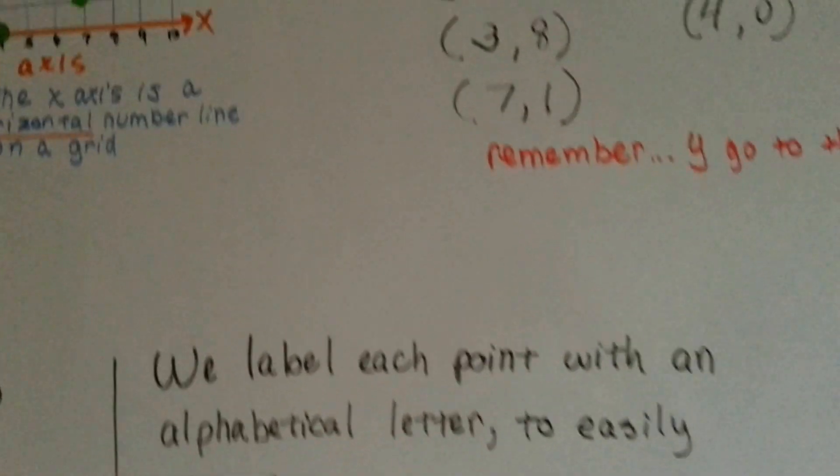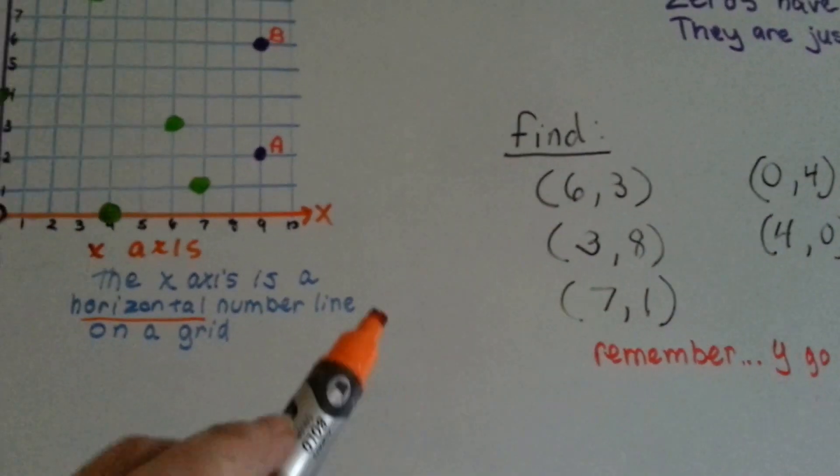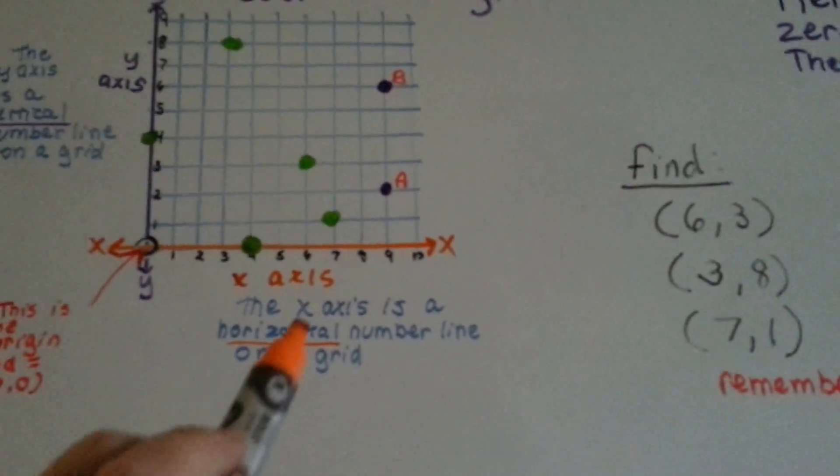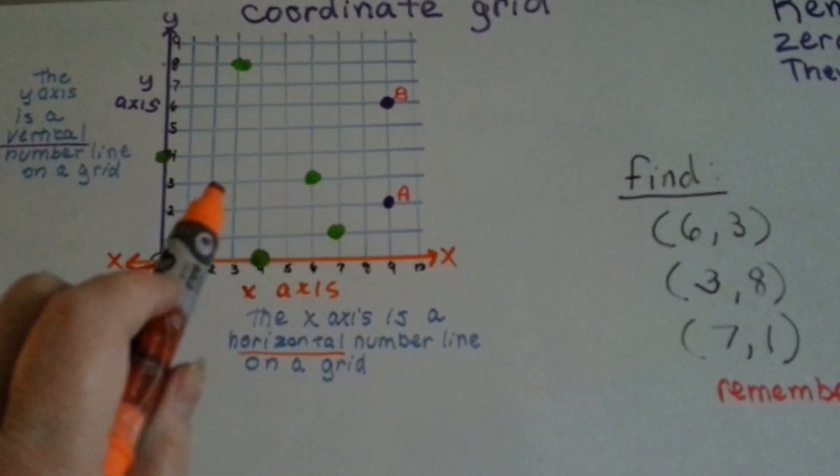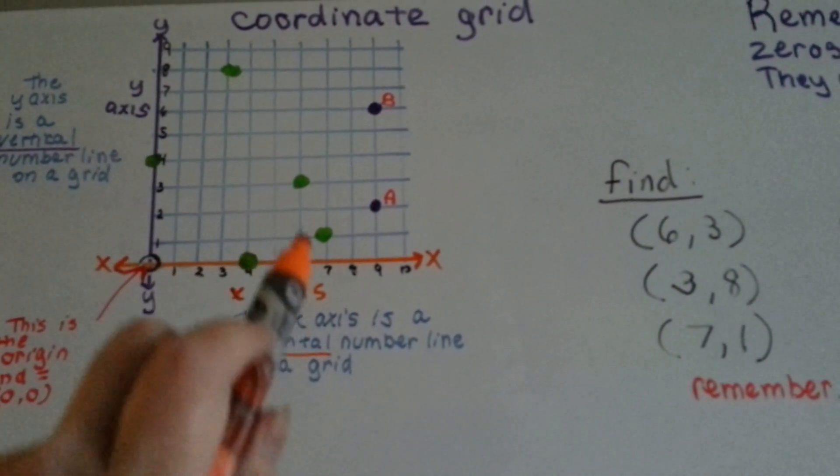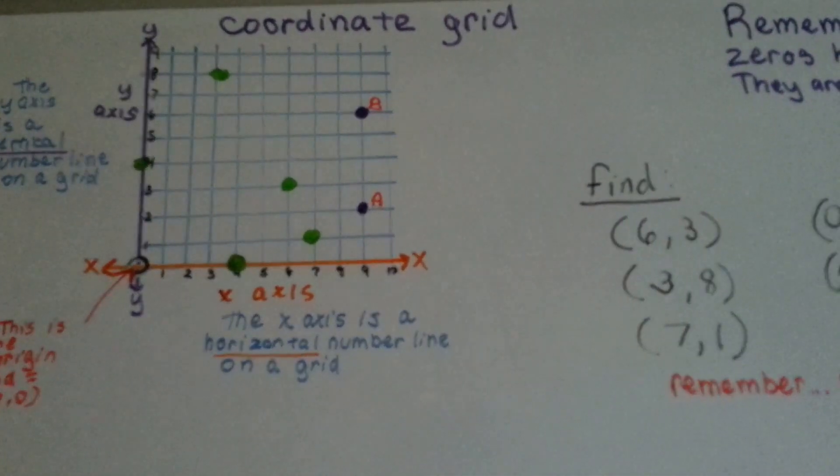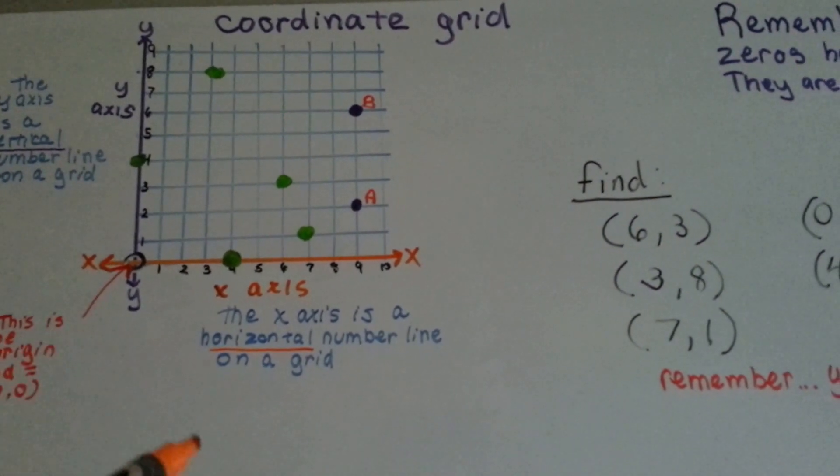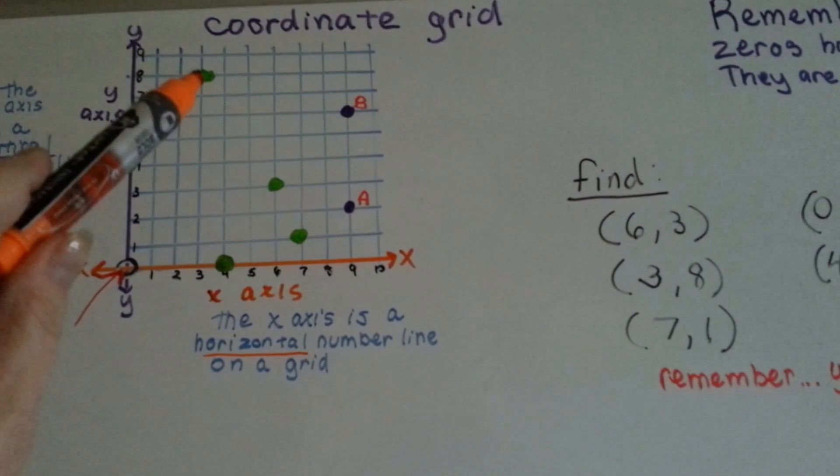If we wanted to find these points on the grid, remember the first one is x and the second one is y. So 6, 3, we would find 6 on the x-axis and go up, and there's 6, 3. 6 on the x, 3 on the y. If we wanted to find 3, 8, we would go to 3 on the x and go up to 8 for the y.